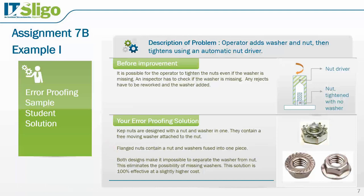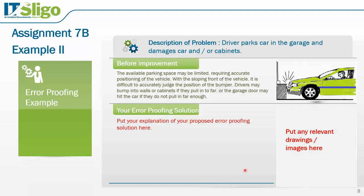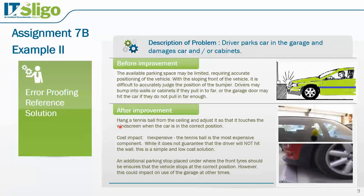Let's look at another example: a driver parks the car in the garage — sometimes they hit the cabinet at the front, and if they don't pull in far enough the garage door hits the back of the car. One student's solution was simply to hang a tennis ball from the ceiling: when you touch the tennis ball you know to stop. That's definitely simple, low cost, and effective.